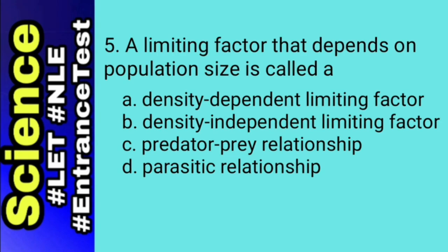For number 5, to understand the different limiting factors, let's define all the given choices. Letter A, the density-dependent limiting factors operate strongly only when population density reaches a certain level. It is composed of competition, predation, herbivory, parasitism, disease, and stress from overcrowding.